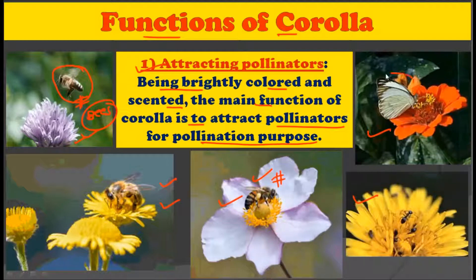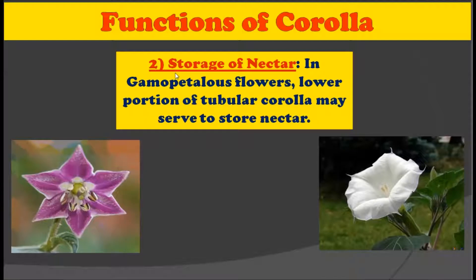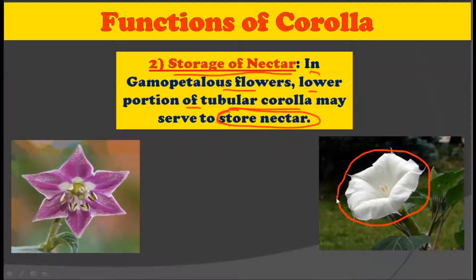In the fourth picture you can see a butterfly aiding in pollination, and in the fifth picture ants are aiding in pollination. The second function of the corolla is storage of nectar. In gamopetalous flowers, the lower portion of the tubular corolla may serve to store nectar. The base of the funnel-shaped structure acts as a nectar store, so the corolla provides a place for storing nectar.